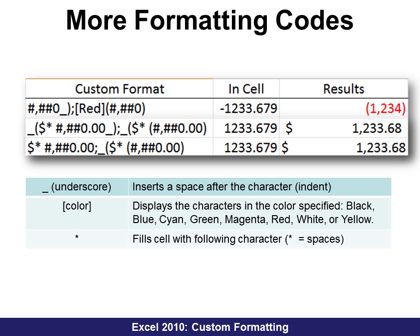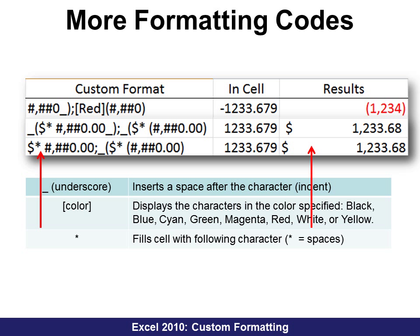Once we've got positive and negative, we might want to add other codes. For example, maybe I want my negative to show red, or both red and parentheses — we do have that option. The underscore will insert a space like an indent, so the number isn't up against the wall of the cell. For color, like red, you simply write it in square brackets. There are only certain colors you can specify: Cyan, Green, Magenta, Red, White, and Yellow. If you use a star, whatever follows the star will fill in the space — for example, between where the dollar sign is and where the number starts — with spaces, asterisks, or anything else you'd like.